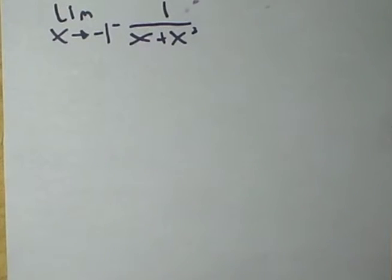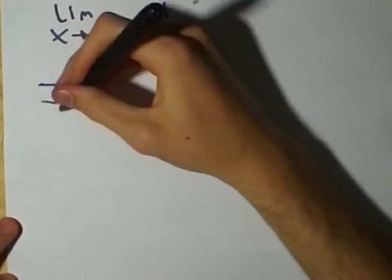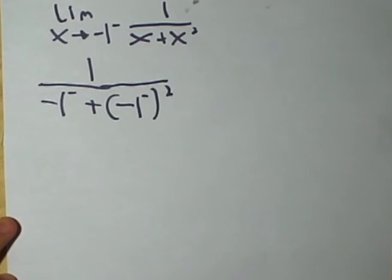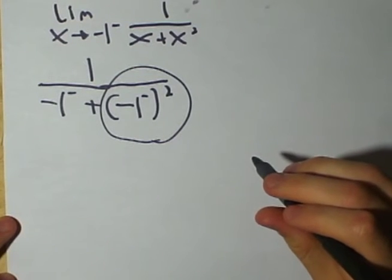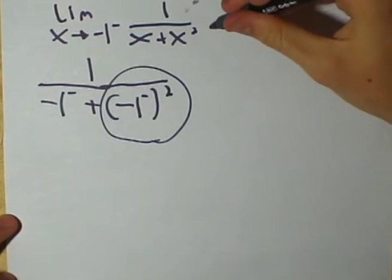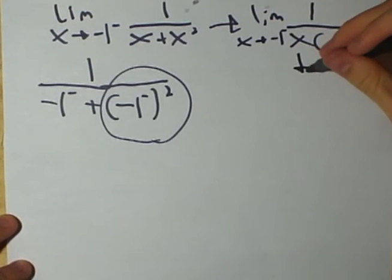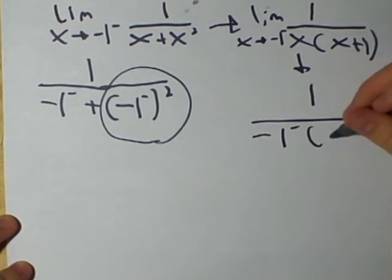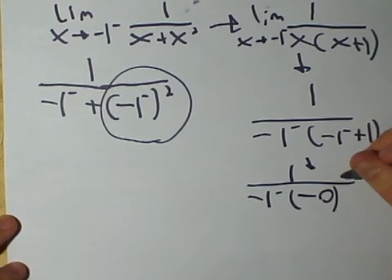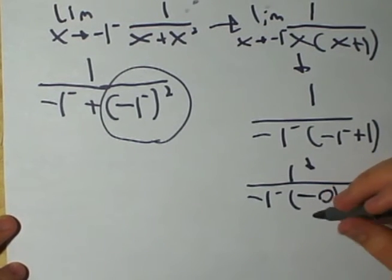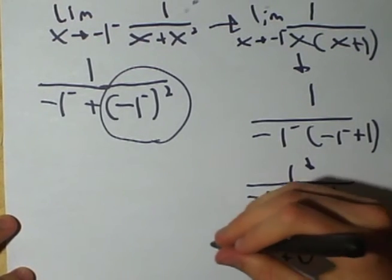Now let's try a harder problem. First, let's try plugging in negative 1 minus. However, notice that there is a negative 1 minus squared, which would make this approach number indeterminate. Instead, we must factor. Then, we can now plug in the approach number. This forms negative 0. And then you multiply negative 0 times negative 1, which equals positive 0. This results in infinity.